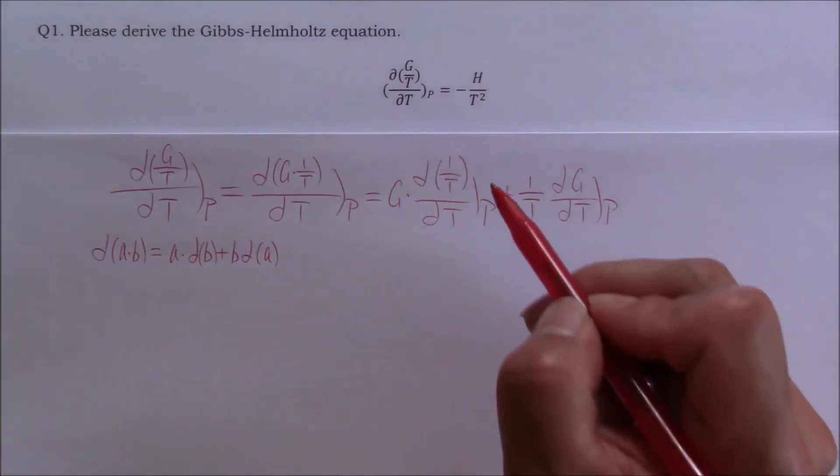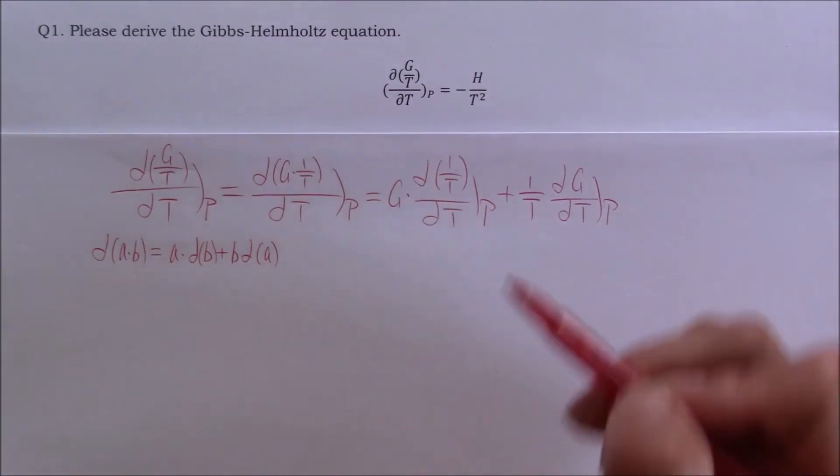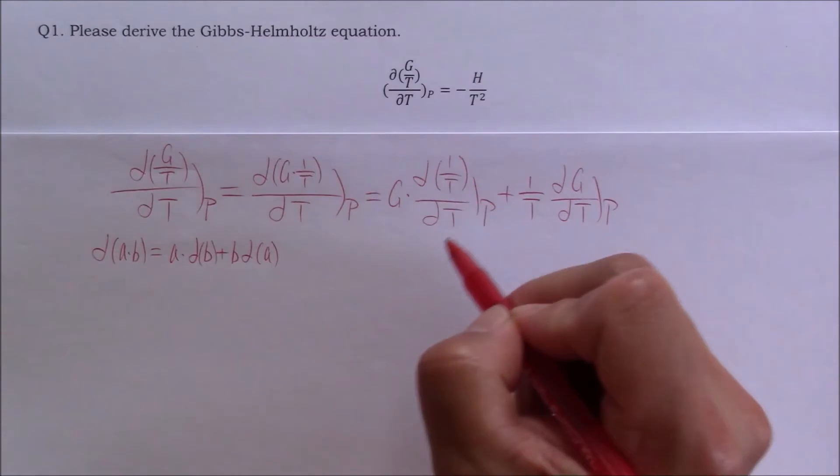We know the partial derivative of 1 over T partial T. It is the same as d1 over T dT.